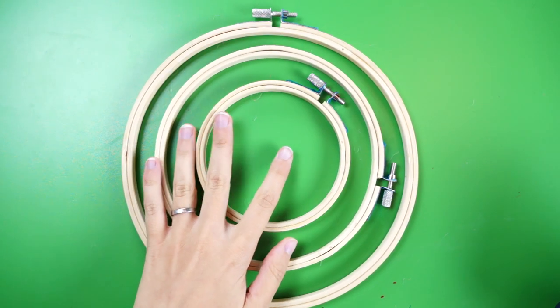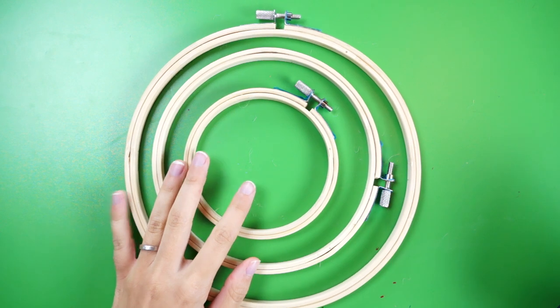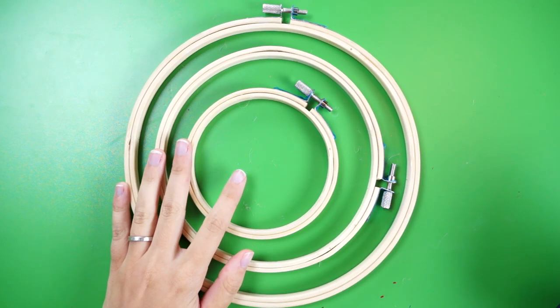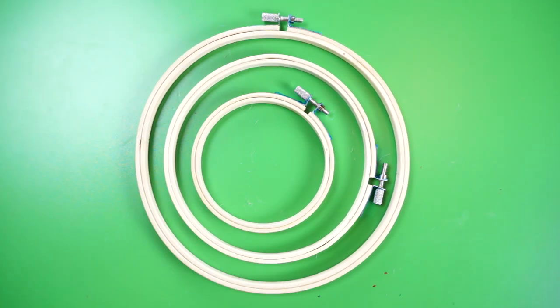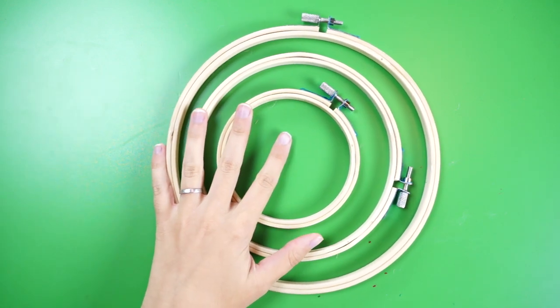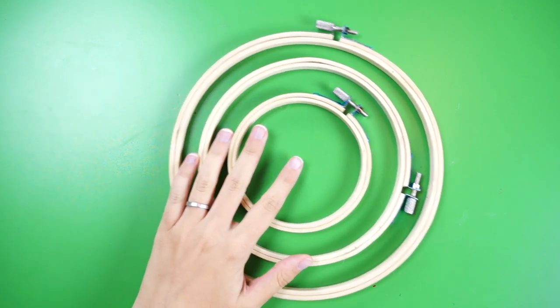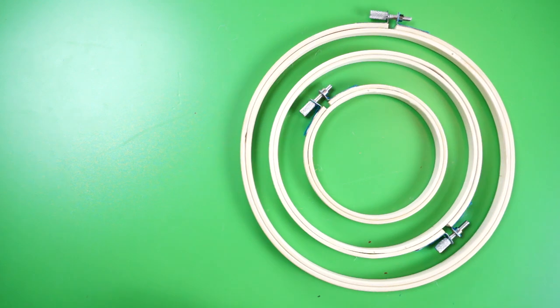This large version of Hermione's Time-Turner is made out of three wooden embroidery hoops. Mine are 8 inch, 6 inch, and 4 inch sizes. You can choose to make yours bigger or smaller, just make sure that they will fit inside one another like this.